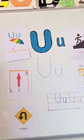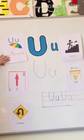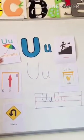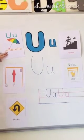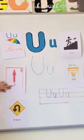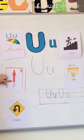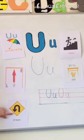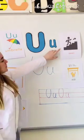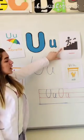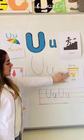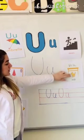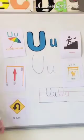Okay kids, let's review again. Umbrella. Repeat after me kids: umbrella. Up. And U-turn. U-turn. Very good kids. Repeat after me: upstairs. Upstairs. And last one is under. Look at the cat is under the table.